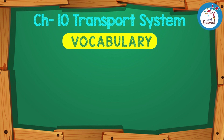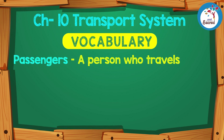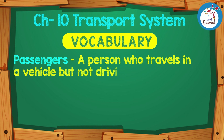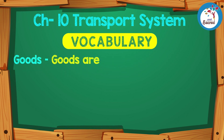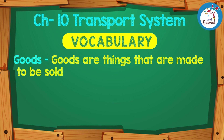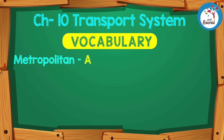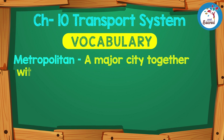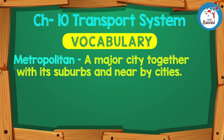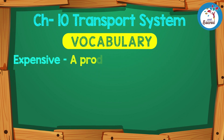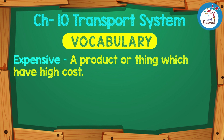Vocabulary: Passengers — a person who travels in a vehicle but is not driving it. Goods — things that are made to be sold. Metropolitan — a major city together with its suburbs and nearby cities. Expensive — a product or thing which has a high cost.